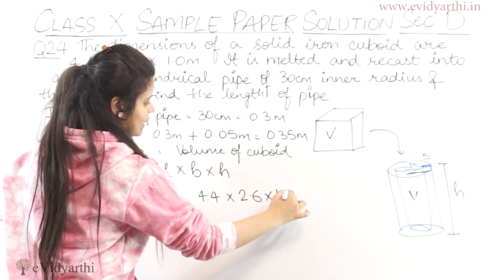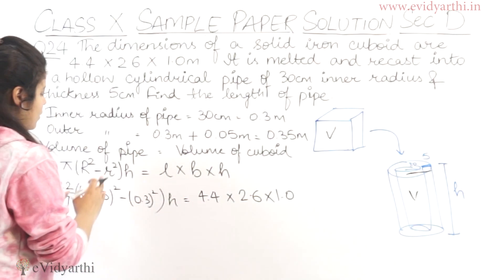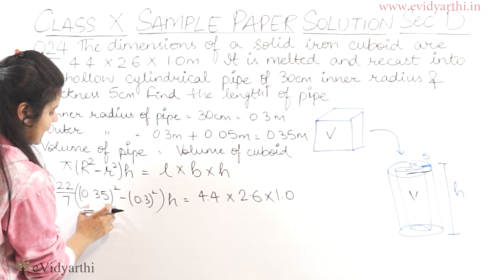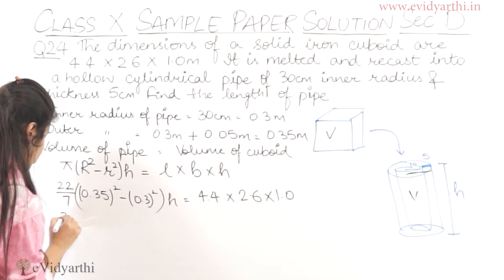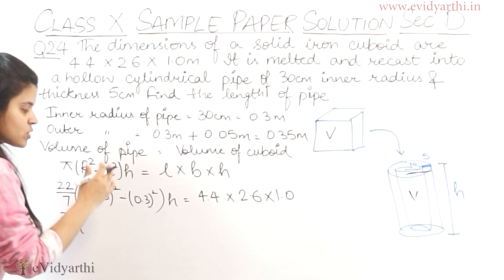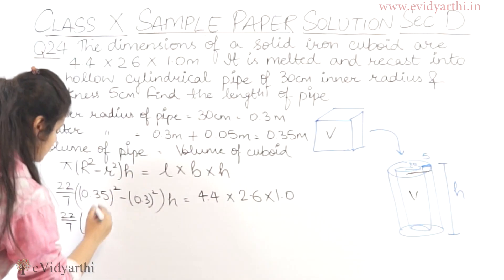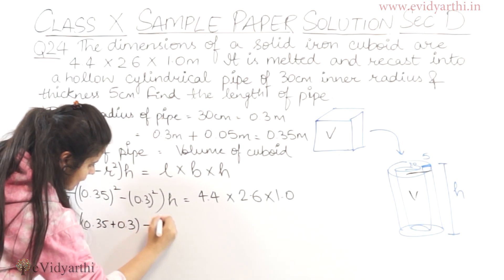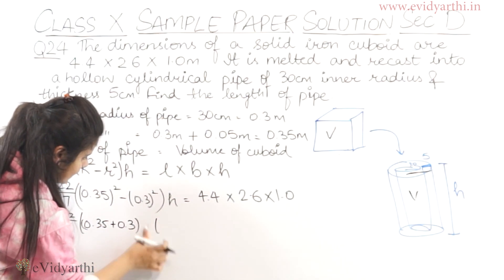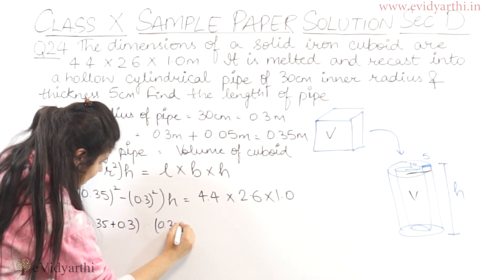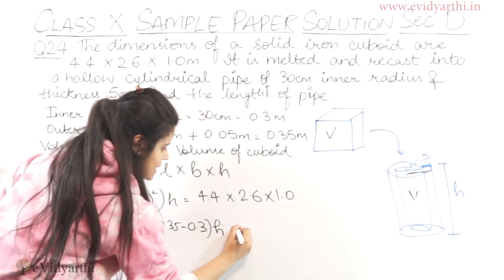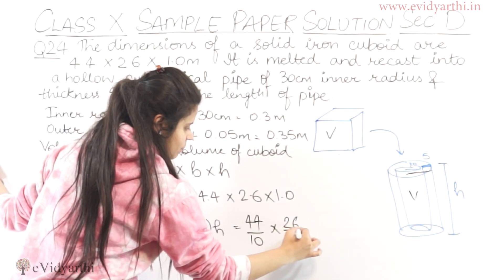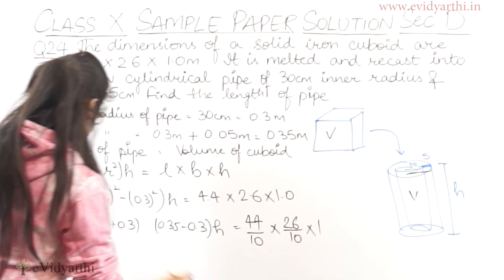Instead of squaring 0.35 and 0.3 separately, we can use the identity a² - b² = (a + b)(a - b). So (22/7) × (0.35 + 0.3)(0.35 - 0.3) × h = 44/10 × 26/10. The decimal points can be removed by writing 4.4 as 44/10 and 2.6 as 26/10; the 1.0 stays as 1.